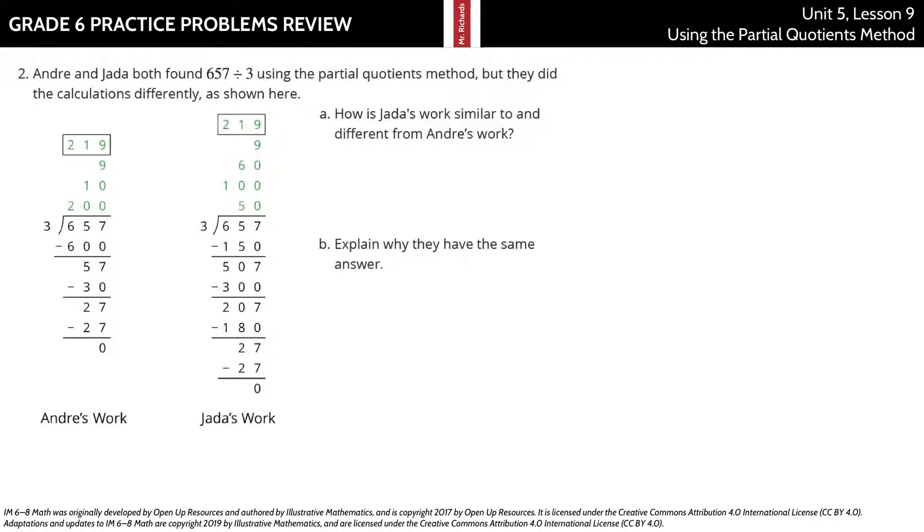Now, Andre and Jada both found 657 divided by 3 using the partial quotients method, but they did their calculations differently as shown here. How is Jada's work similar to and different from Andre's work? Let's break this down.